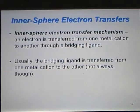I want to now go over the inner sphere electron transfer reaction. For an inner sphere reaction, an electron is transferred from one metal cation to another through a bridging ligand. Usually, in this type of reaction, the bridging ligand is transferred from one metal cation to the other. But that is not always true.